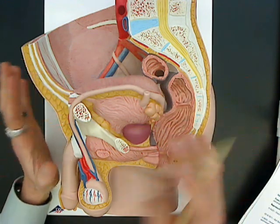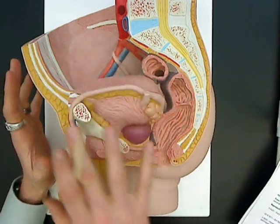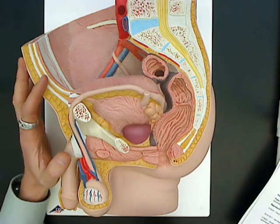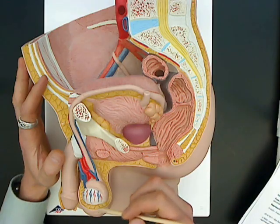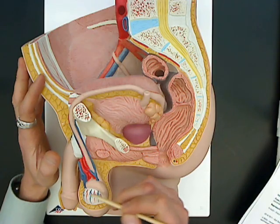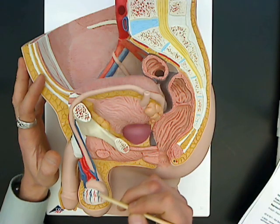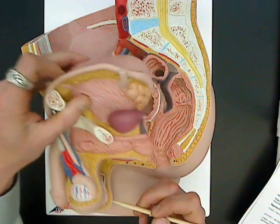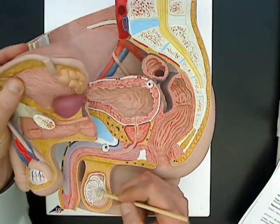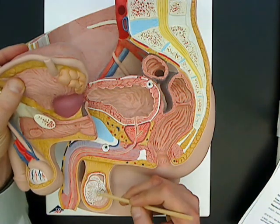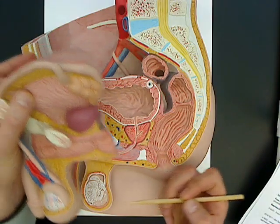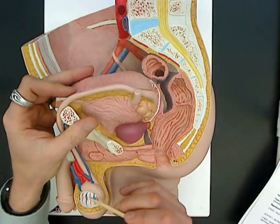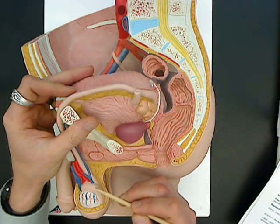We'll start with the scrotum, which surrounds the testicles. This is the left testicle here, and if I open this up, that's the right testicle. The right testicle is shown in cross-section, so you can see part of the epididymis. This is the testicle, and this is the epididymis.